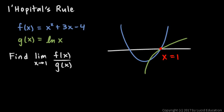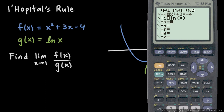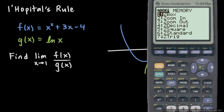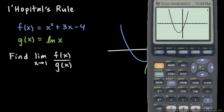Let's take a look at those two graphs on the calculator. I've got y1 = x² + 3x - 4, that's function f, and the natural log function g in for y2. I'll graph this starting with the standard zoom settings. There's the quadratic and there's the natural log function. They both cross the axis right there at x = 1, but that's kind of hard to see, so let's zoom in.